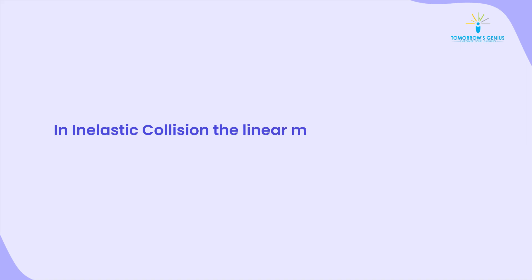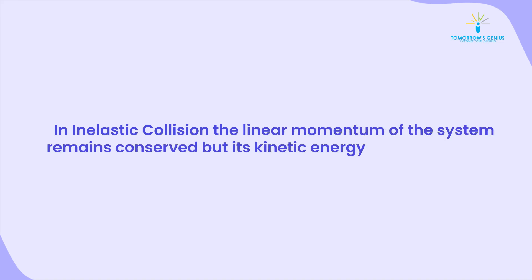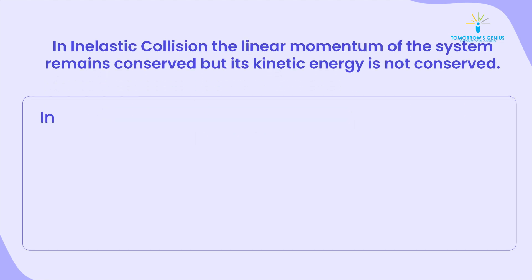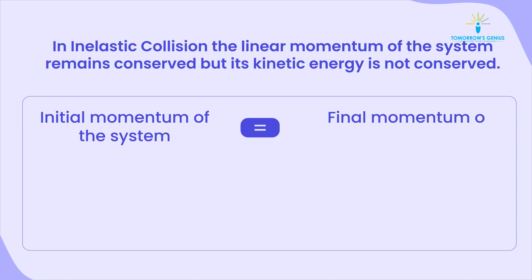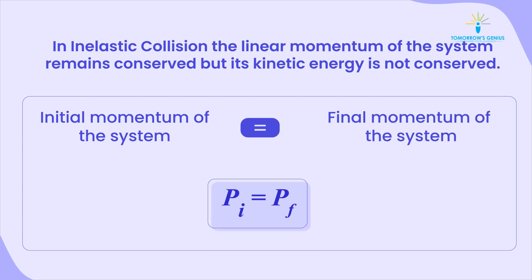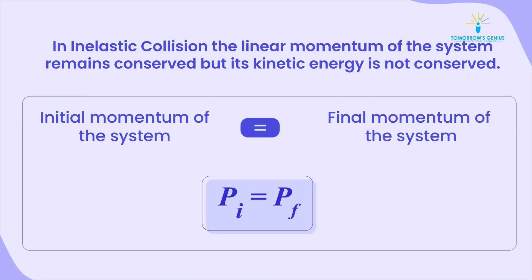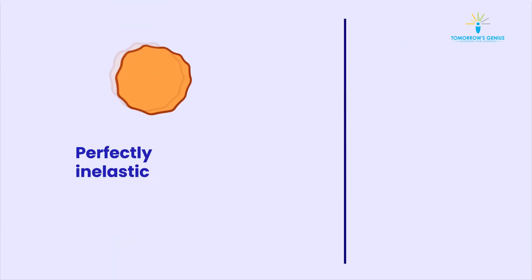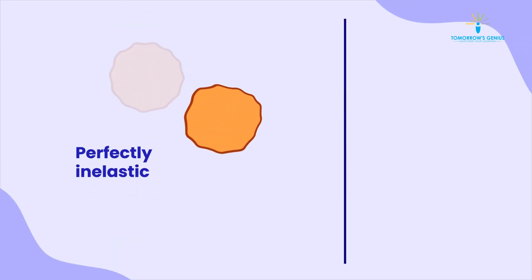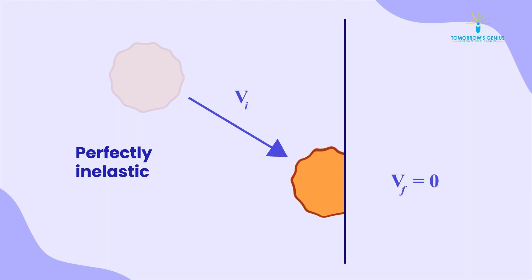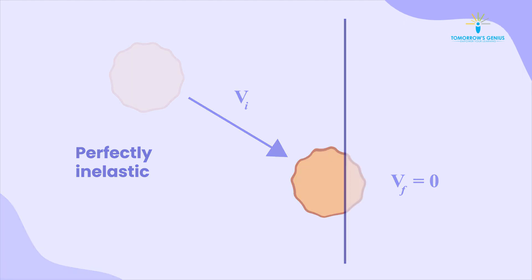In Inelastic Collision, the linear momentum of the system remains conserved but its kinetic energy is not conserved. Initial momentum of the system equals final momentum of the system, that is Pi = PF. For example, when we drop a ball of wet putty on the floor, the collision between the ball and floor is an inelastic collision.